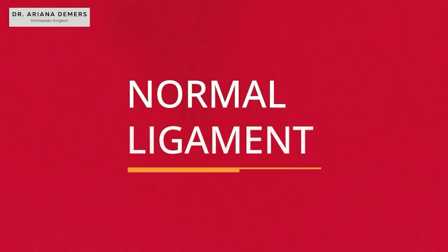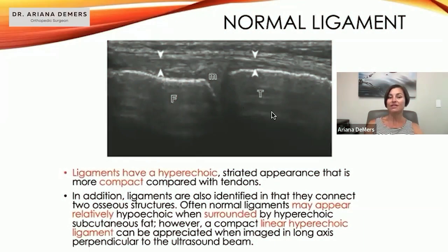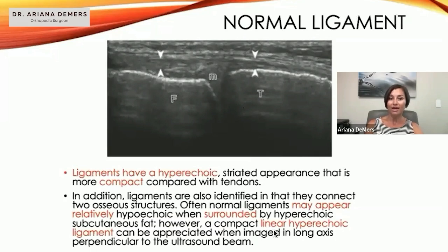This is ligament — a bone-to-bone connection. This is femur and tibia, and this is an MCL. It looks similar to tendon and is hyperechoic, but it's a little more compact than tendons, as you would expect. A compact, linear, hyperechoic structure running bone-to-bone is ligament.